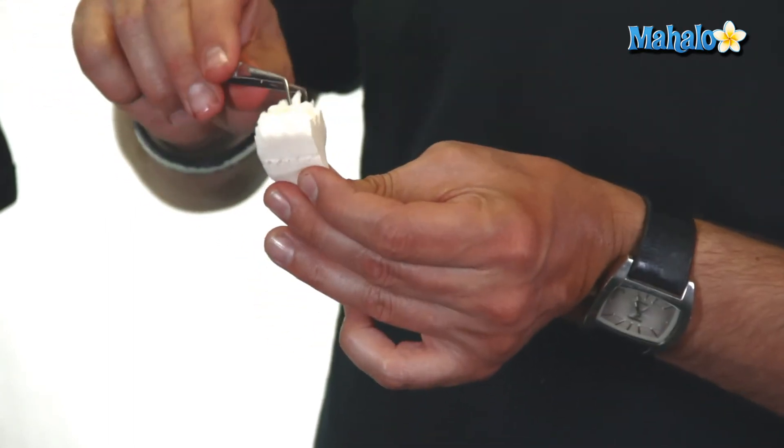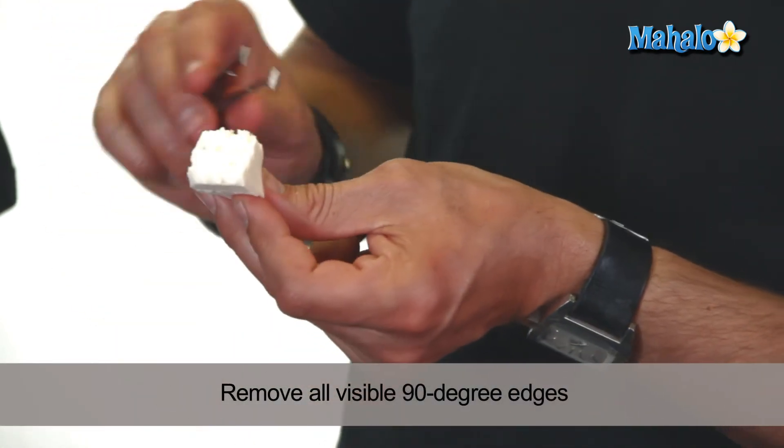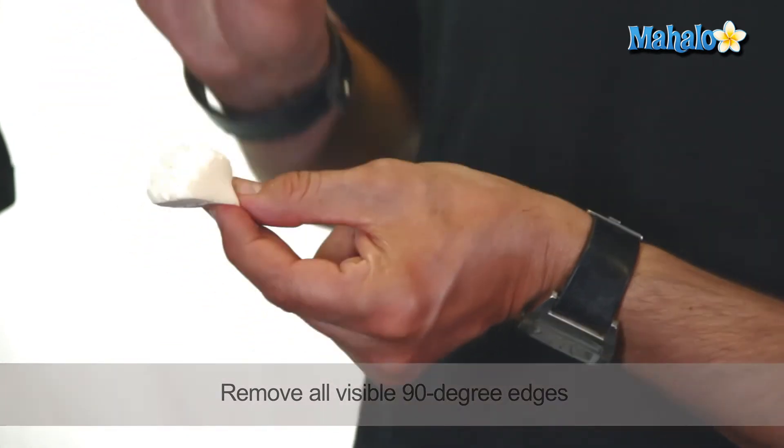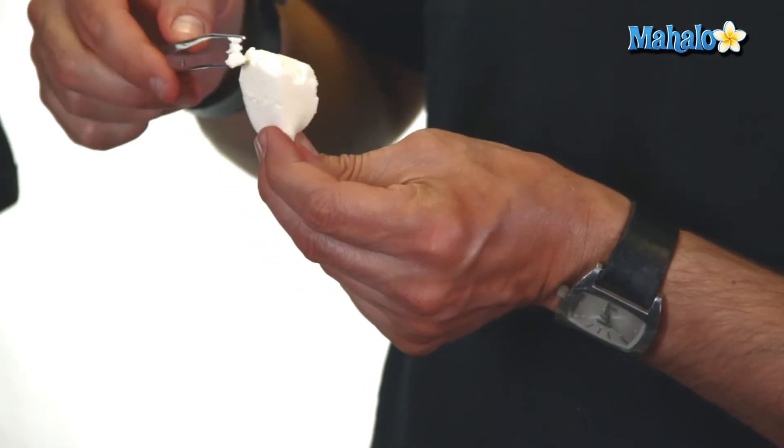You're going to take the sponge and pull it away, like so. Remember to get rid of the 90-degree edges around the outside of the sponge. If you can see here, there's still a 90-degree angle, so I'm going to pull that away and do it around the entire outside of the sponge.